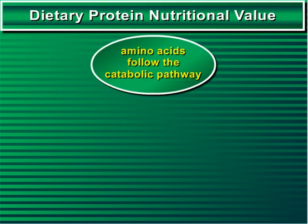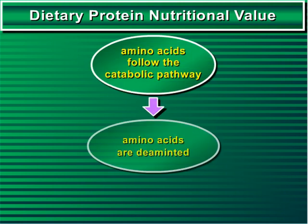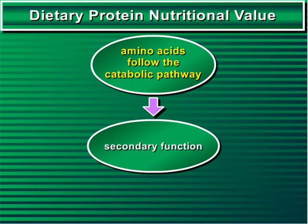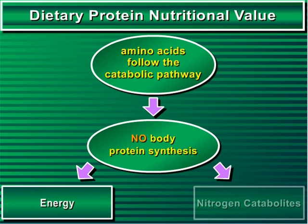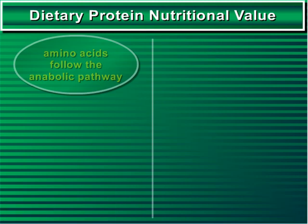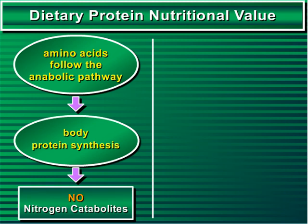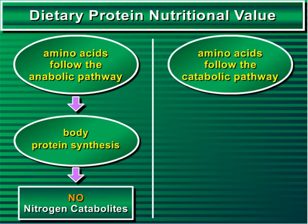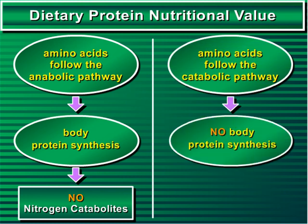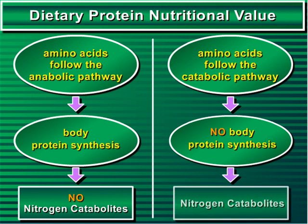On the contrary, when amino acids follow the catabolic pathway, they are deaminated, which is their secondary function. Therefore, they cannot act as precursors of body protein synthesis. Throughout the catabolic pathway, energy and nitrogen catabolites are released. The anabolic pathway has two main positive characteristics: it provides body protein synthesis, and it does not produce any nitrogen catabolites. On the contrary, the catabolic pathway has two main negative characteristics: it cannot provide body protein synthesis, and it does provide nitrogen catabolites, which are metabolic toxic waste.